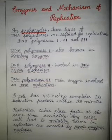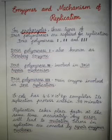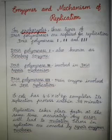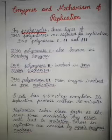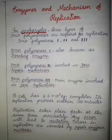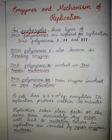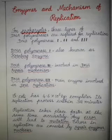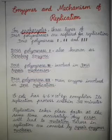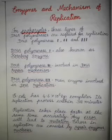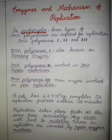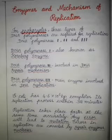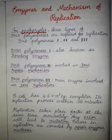In prokaryotes there are three types of DNA polymerases which are involved in the replication: DNA polymerase 1, DNA polymerase 2, and DNA polymerase 3. DNA polymerase 1 is also known as the Kornberg enzyme and is involved in replication. DNA polymerase 2 is involved in the DNA repair mechanism. DNA polymerase 3 is the main enzyme which is involved in the DNA replication.